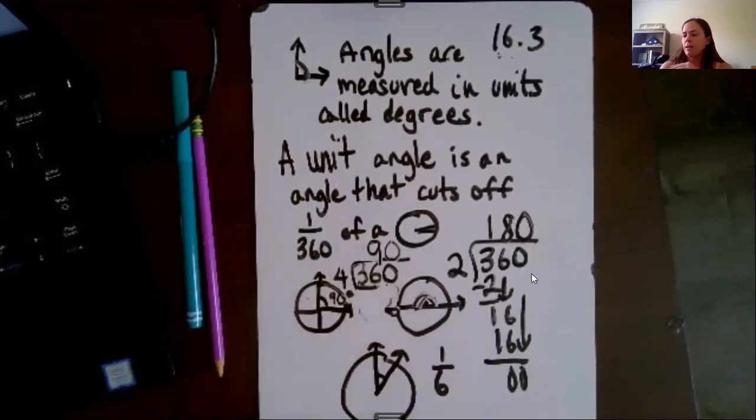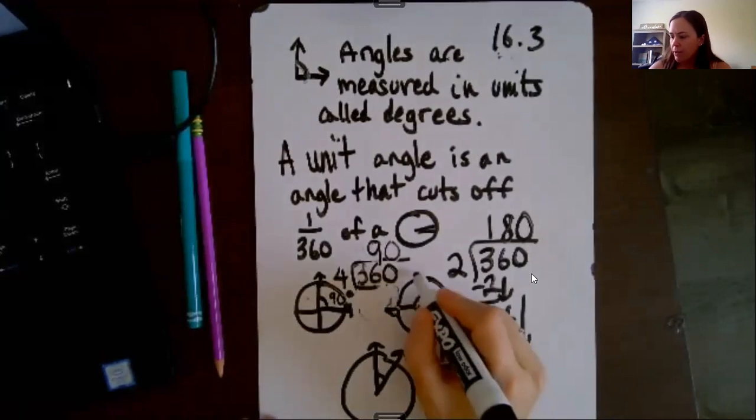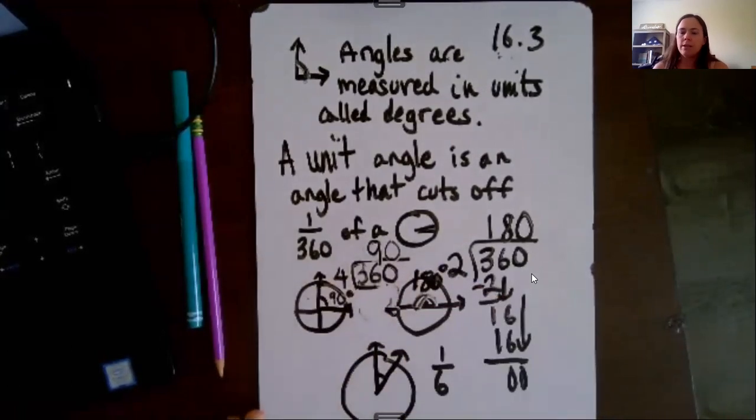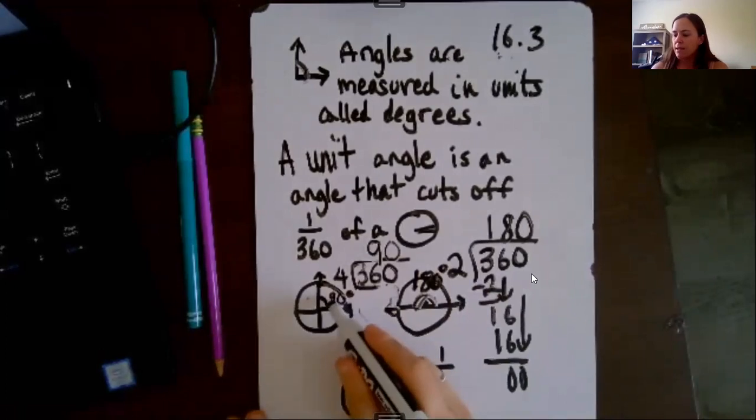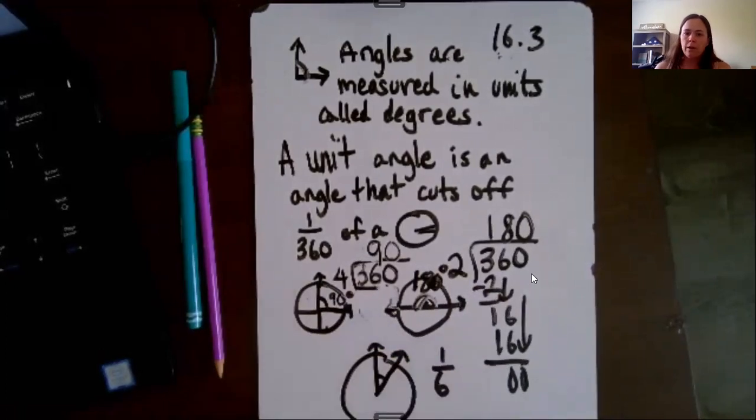So if somebody does like a skateboard trick and they do a half, a half of a full flip, they call it 180 degrees. So this right here would be 180 degrees. And that makes sense, because this was 90, and this was 90, plus 90 is 180.